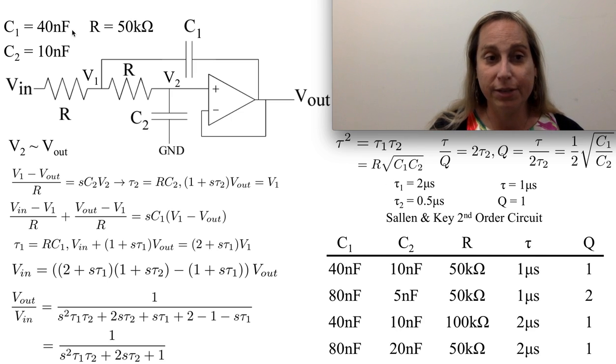And so for the parameters given up here, you actually can get your tau1 and tau2. The geometric mean of that one turns out to give you one microsecond, which is exactly what you expect here. And the values that you're given give you a Q equal to one.